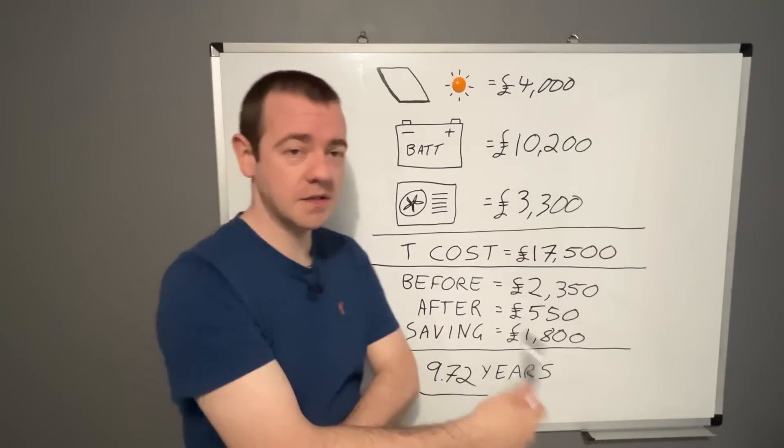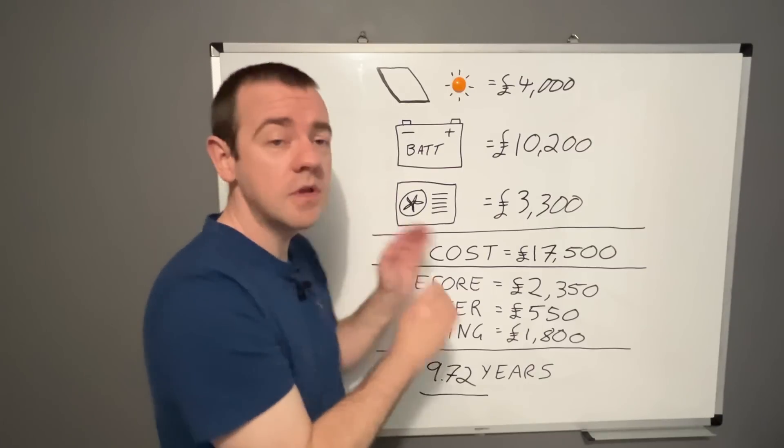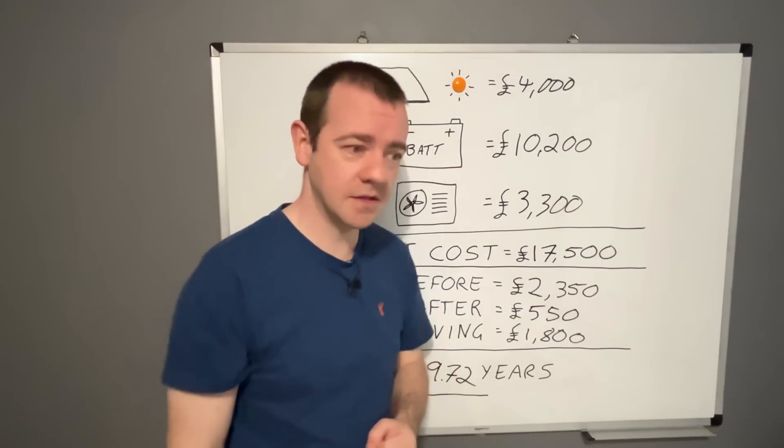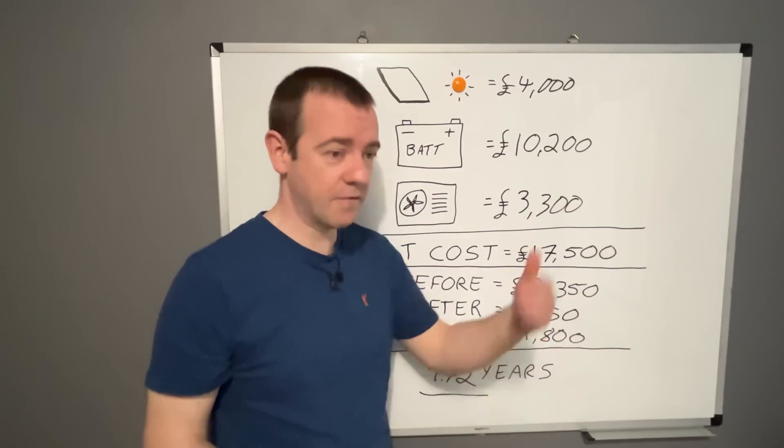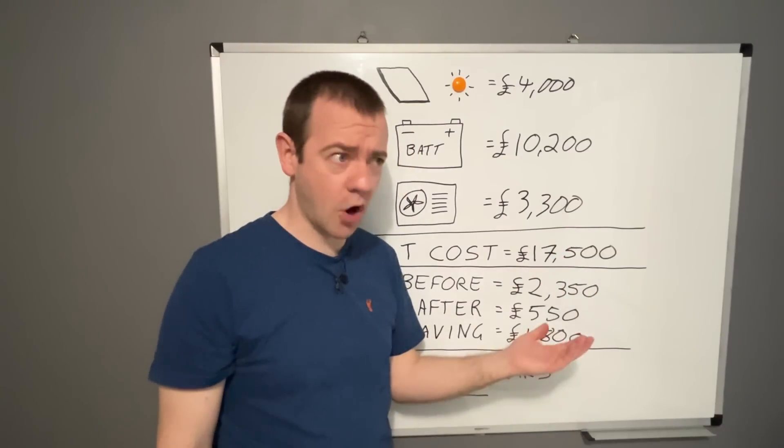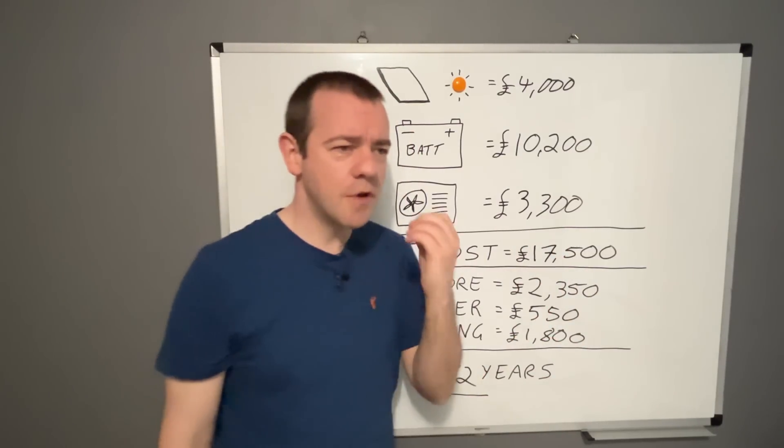So for some people, this won't make sense at all from a purely financial point of view. But as I said earlier, some people do this because they want to. I've just removed our carbon monoxide detectors because we've no gas appliance in the house anymore. So we're not going to, you know, have that potential fatality because of a dodgy hob or gas boiler or anything like that.